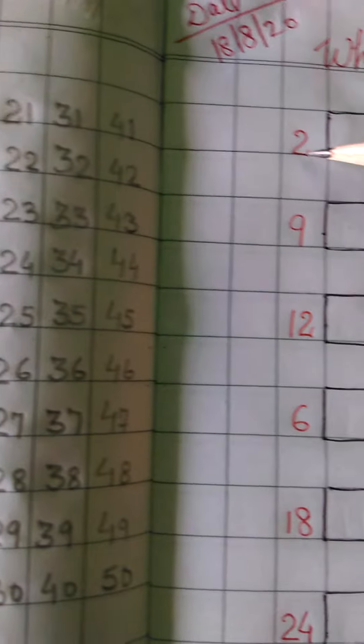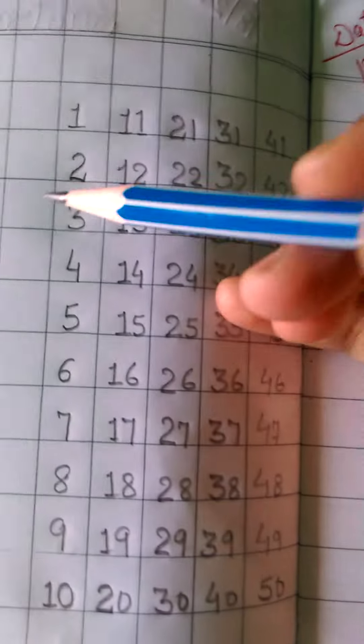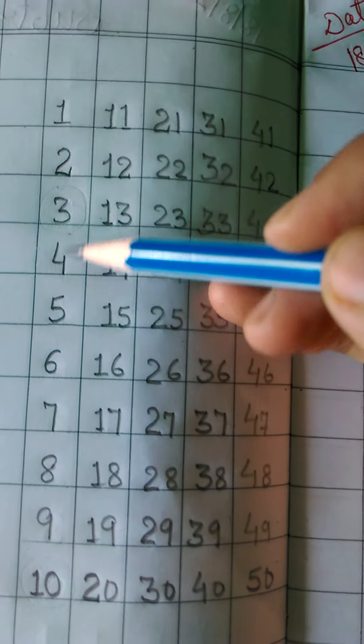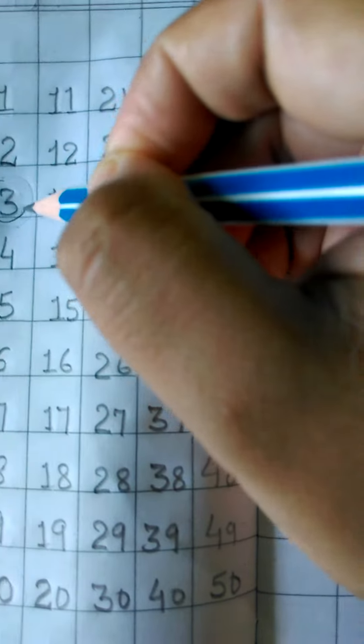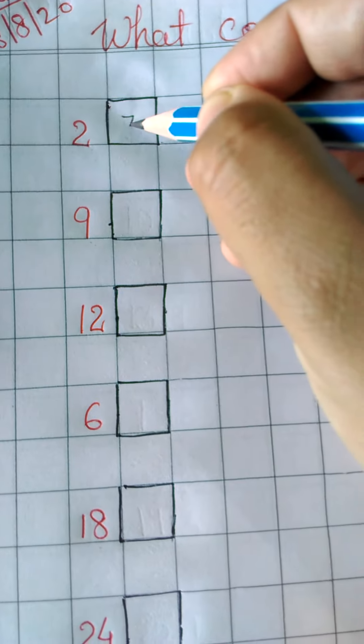Here you can see 2 is written. So we will check after 2 which number comes? 3. We have to look downward. What comes after 2? 3. So in the box we have to write 3.